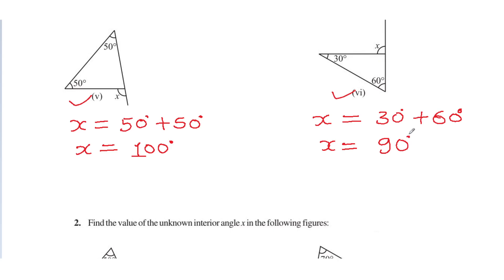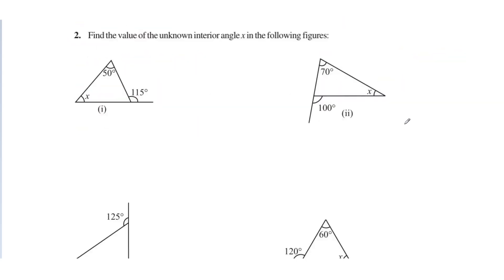Now let's look at question number 2. Find the value of the unknown interior angle x in the following figure. In question 1 we found the exterior angle; now the exterior angle is given and we need to find the interior angle. One interior opposite angle is given and we have to find the value of the other one.